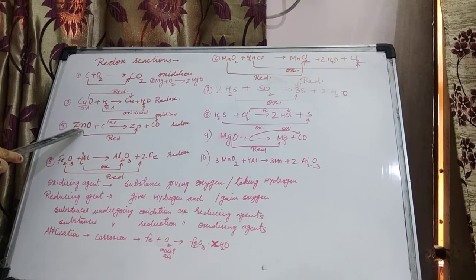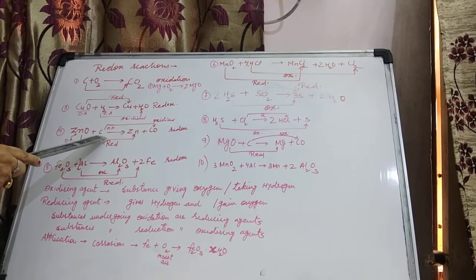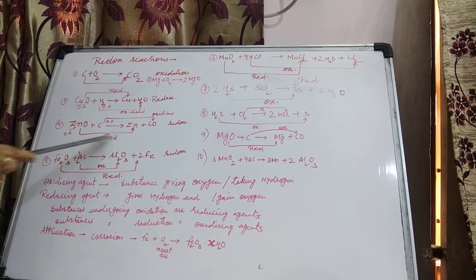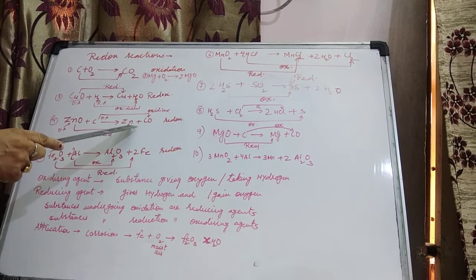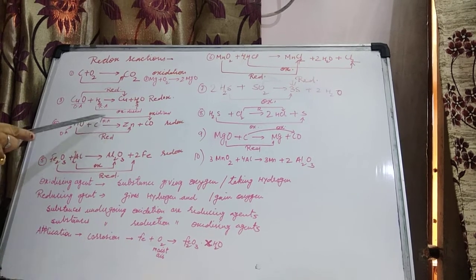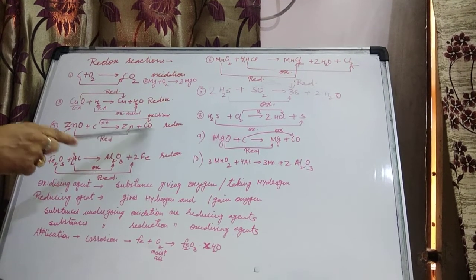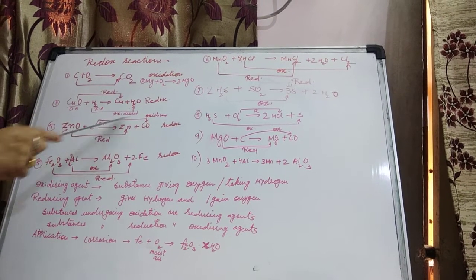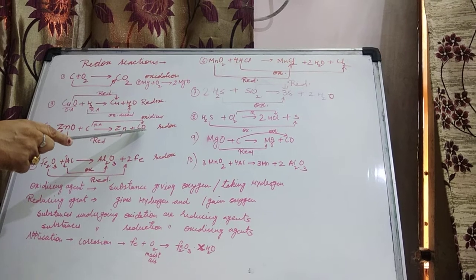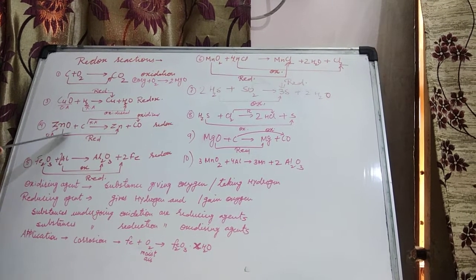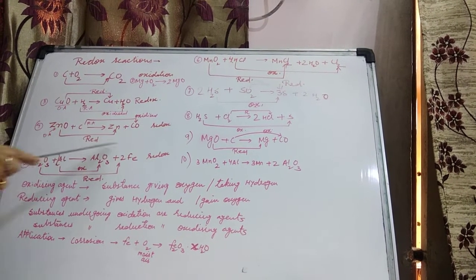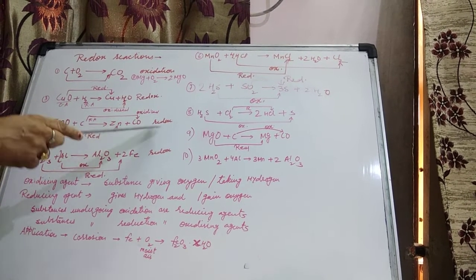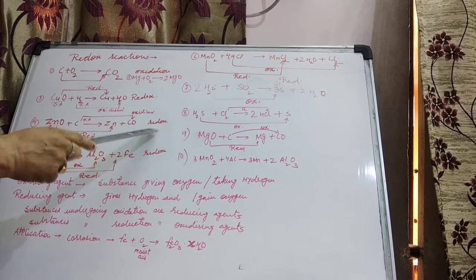Another example: ZnO reacting with Carbon gives Zn plus CO. ZnO is converted into Zn — removal of Oxygen, so that is Reduction. Carbon is converted into Carbon Monoxide — addition of Oxygen, so that is Oxidation. Both reactions take place simultaneously, so this reaction is Redox.